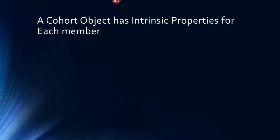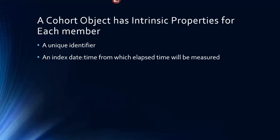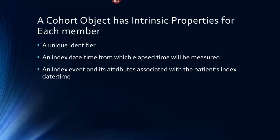A cohort object has intrinsic properties for each of its members. Each member has a unique identifier. Each member has an indexed date time, from which all elapsed time will be measured. Each member has an indexed event and attributes associated with a patient's indexed date time.